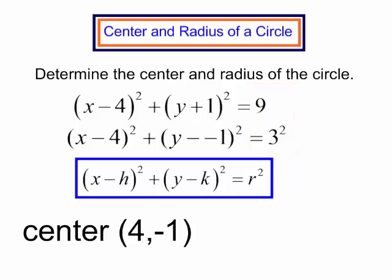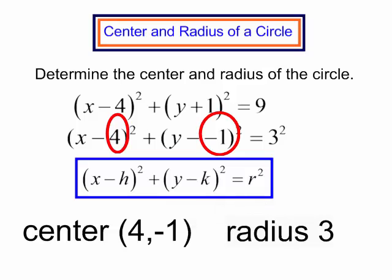The center of the circle is (4, -1) and the radius is 3.